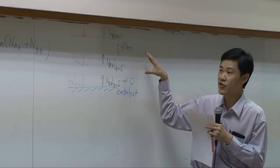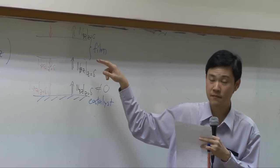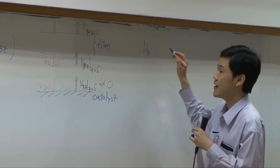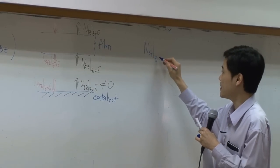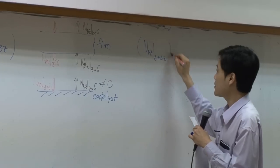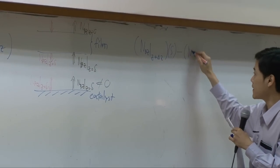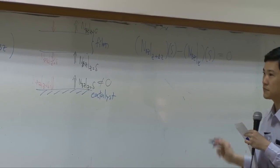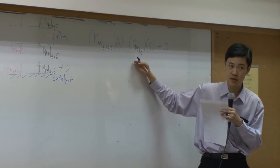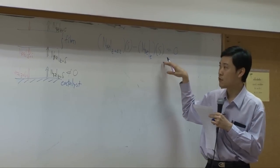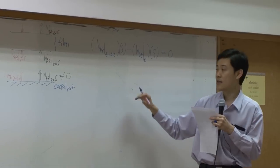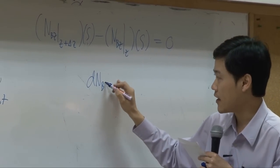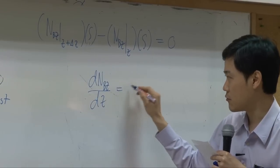If you take a shell balance for species B, you can say that flux of B in at Z plus delta Z times S minus flux of B going out times S equal to zero. That's a shell balance of B. If you divide the whole equation by S delta Z and take a limit delta Z approaching zero, you will end up with dN_B_Z by dZ equal to zero.